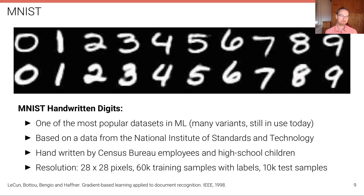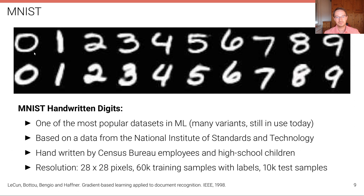Let's look at some datasets. One of the most famous is MNIST, popularized in the machine learning community and still used today. It's based on data from the National Institute of Standards and Technology — handwritten digits by Census Bureau employees and high school children. The images are relatively low resolution, but there's a lot of data: 60,000 training samples with ground truth labels and 10,000 test samples.